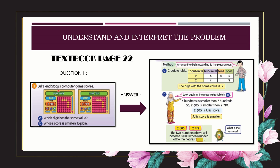Julie's and Stacy's computer game scores. There are two pictures. Julie's game score is 2,605. Meanwhile, Stacy's game score is 2,790. The question for A: which digit has the same value? Question for B: whose score is smaller? Explain.